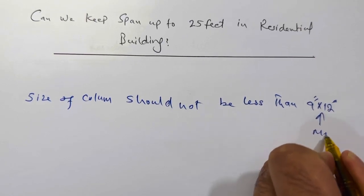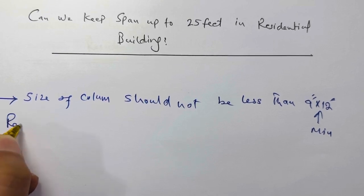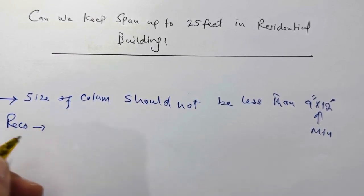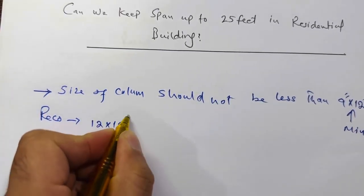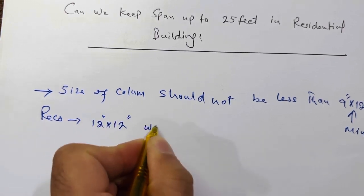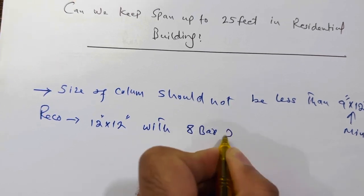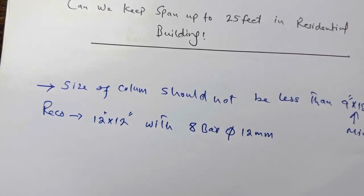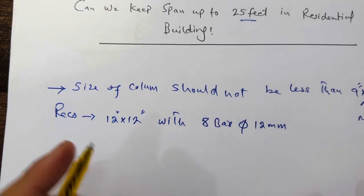But I am recommending you a different size of column. This is my recommendation. So use the size or keep the size of the column 12 by 12 inches with eight bars, and the diameter should not be less than 12 millimeter. This is my recommendation especially for G plus one story.